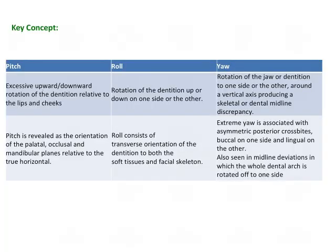To summarize: up and down rotation related to the lips and cheek is pitch; up and down rotation on one side is roll; and side-to-side movement or rotation of the jaw along a vertical axis is yaw. Yaw also results in asymmetric posterior crossbites.